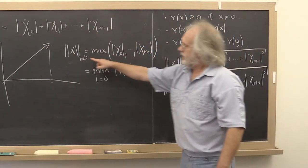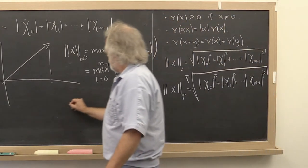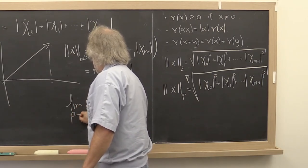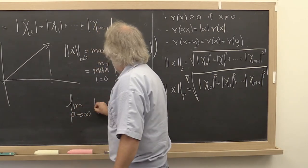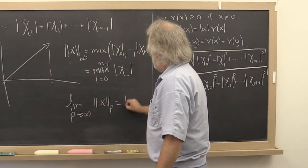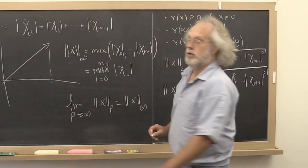The infinity norm turns out also to be a special case of that because you can prove that the limit as p tends to infinity of the p-norm of a vector is equal to the infinity norm of a vector.